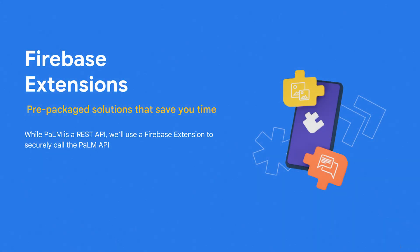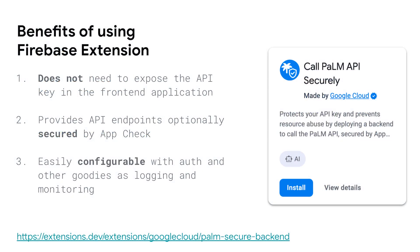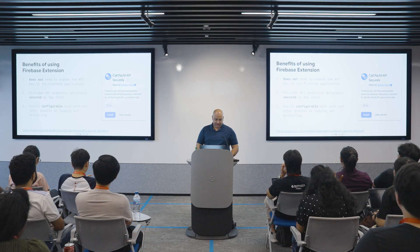Then we'll use Firebase Extensions. As I mentioned, it's prepackaged solutions — we'll secure our Palm API. The benefits: you don't need to expose your API key. You can provide secure endpoints and secure them using AppCheck to make sure calls to your applications are coming from real devices and real people versus an automated bot. You can also easily configure auth like Google auth or Facebook auth, and other things such as login and monitoring.